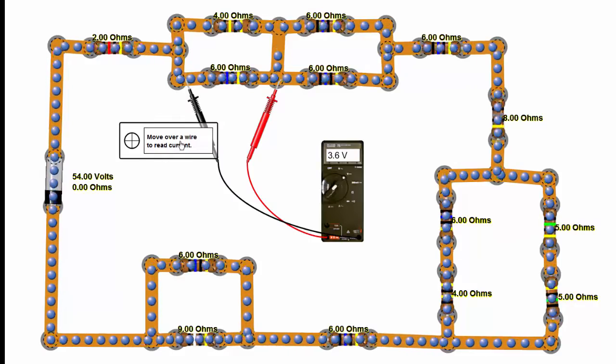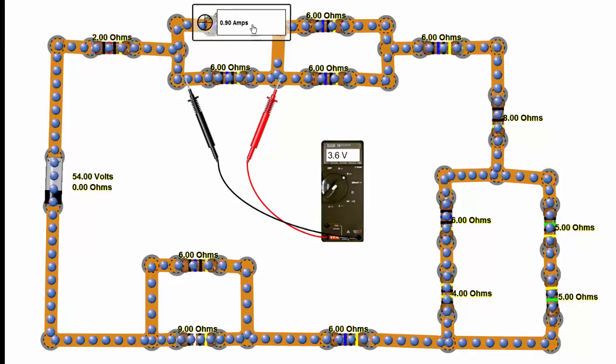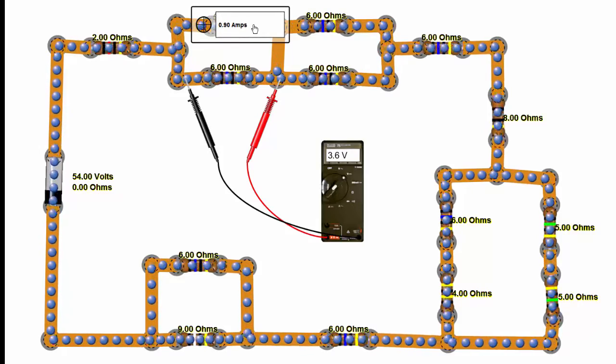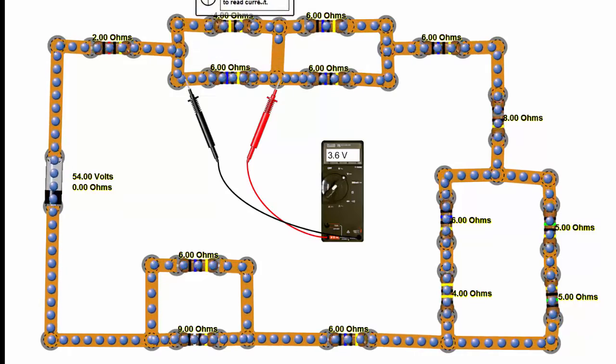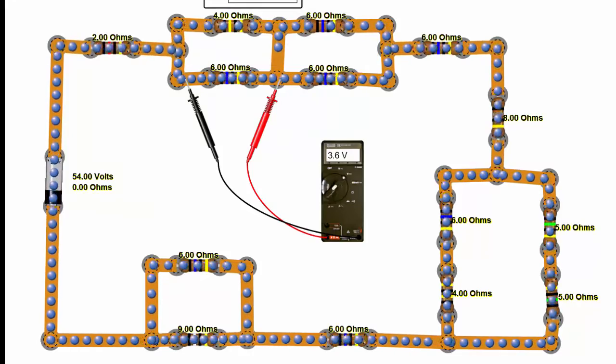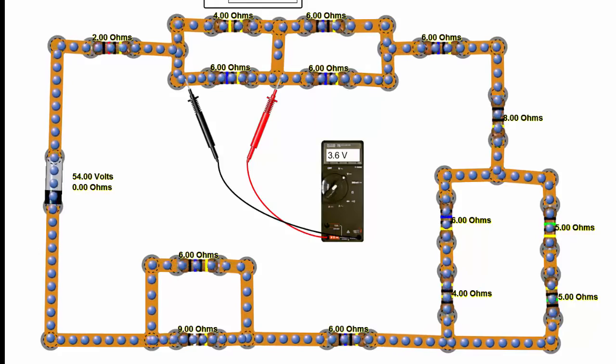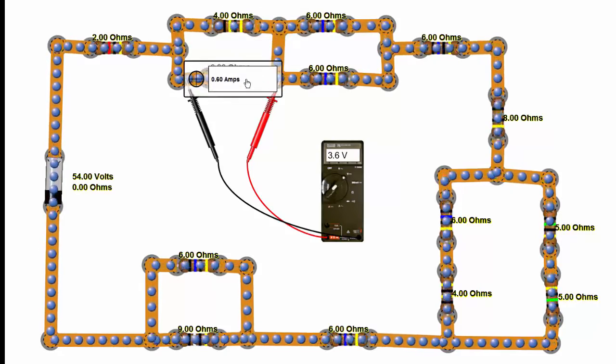But what's going to happen is it's going to split up, and the sum of these currents, we got 0.9 there and we have 0.6 here, the sum should be 1.5. Obviously 1.5 amps of current can't split up in any way other than to create two currents that have a sum of 1.5 amps. So we have 0.6 and 0.9, and that's 1.5.